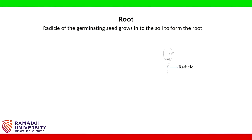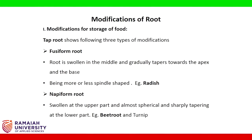The next type of modifications are root modifications. The radicle of the germinating seed grows into the soil to form the root. Modifications for storage of food: tap root shows the following types. Fusiform root: the root is swollen in the middle and gradually tapers towards the apex and base, being more or less spindle-shaped. Example: radish.